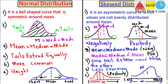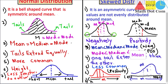Another important difference is that normal distribution is less sensitive to outliers, which makes it more robust. While skewed distribution is more sensitive to outliers. Outliers are extreme values that make the entire data unreliable or from which we cannot extract valuable information.